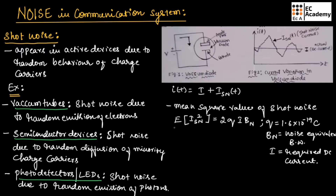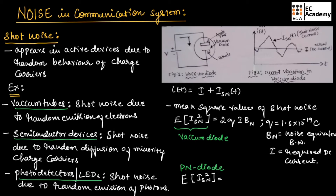This equation for mean square value of shot noise is for the vacuum diode. For a PN junction diode, the mean square value of shot noise is given as E[ISN²] = 2Q(I + IS)·BN, where IS is the reverse leakage current.